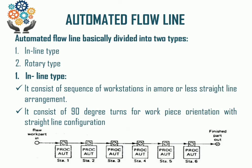The inline type consists of 90-degree turns or work piece orientation within the straight-line configuration. Inline type Automated Flow Lines are mostly implemented where the work piece or work part product is big.